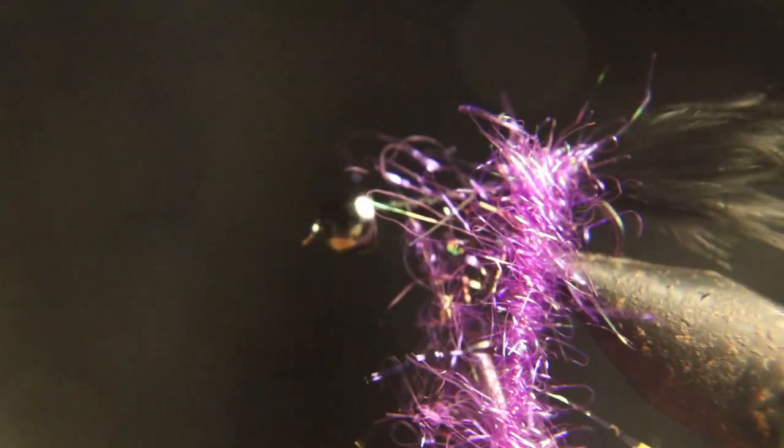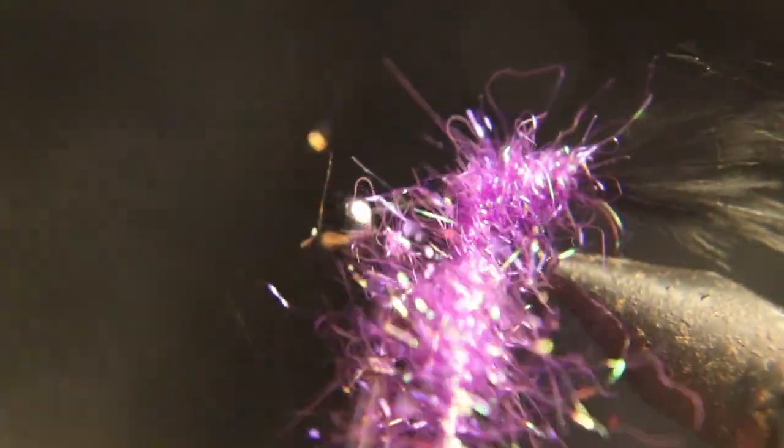Then you're going to wrap that dubbing loop forward right behind the bead and tie it off.